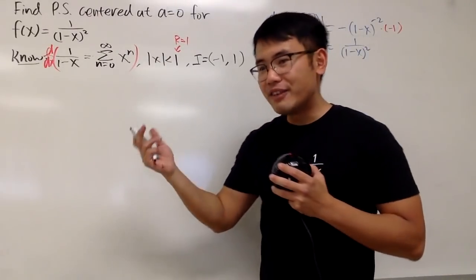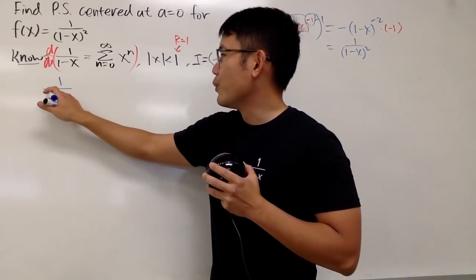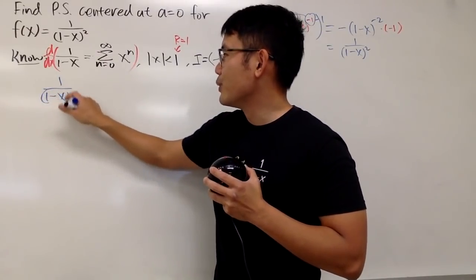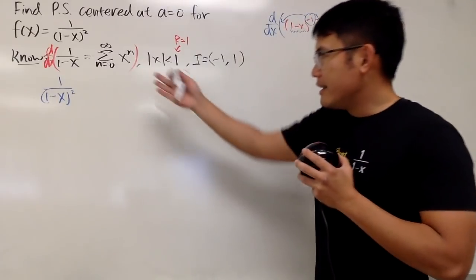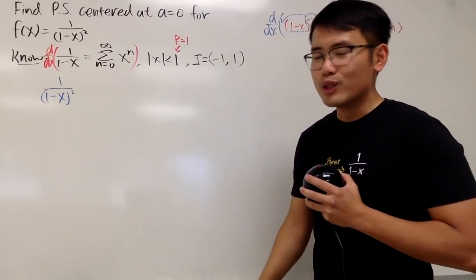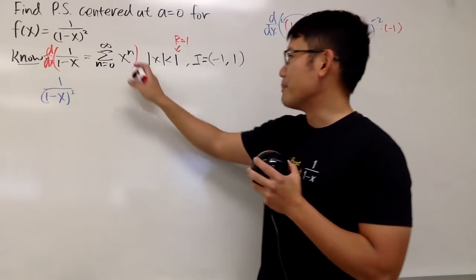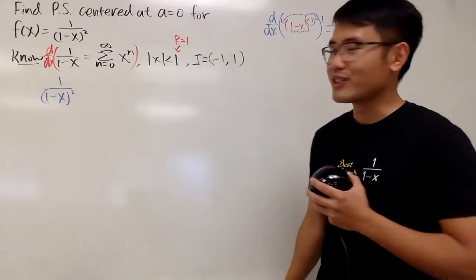Therefore, on the left-hand side, we get d/dx equal to 1/(1-x) to the second power. Very nice. And as of the right-hand side, we can just do our usual derivative with the power, because this is technically like a power function.